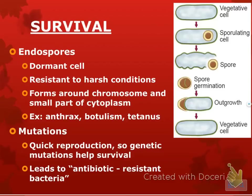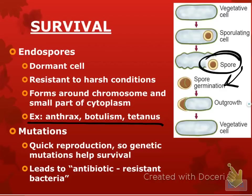Survival: endospores are little dormant cells inside bacteria that allow them to survive harsh conditions. They form around part of the DNA of the bacteria, preserving that genetic information. If the cell dies, the spore is still there and can germinate into a new cell. Examples include anthrax, botulism, and tetanus — these are really bad bacterial diseases, and this is why it's so hard to fight them.